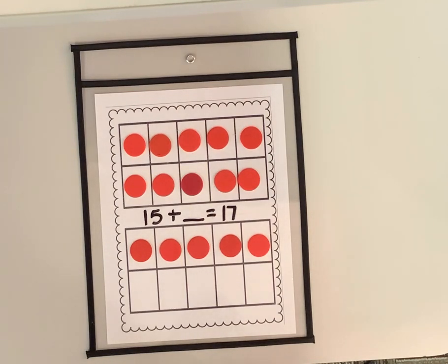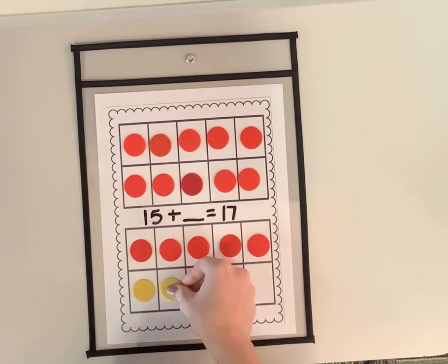How many counters do I need to add to make 17? If I start at 15, how many more do you think I need to add? Well, I'll start at 15 and then keep going until I get to 17. 15, 16, 17.